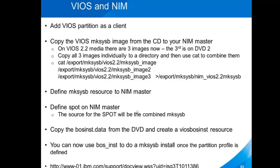You will also copy the BOSS INST data from the DVD and create that as a BOSS INST resource specific for the VIOs. You can use BOSS INST — do the smitty NIM and then go into BOSS INST — and do a makesysb install once you've defined a partition profile on the HMC. I have a link to a document that goes into this in a lot more detail. This would just do a vanilla VIO server installation.